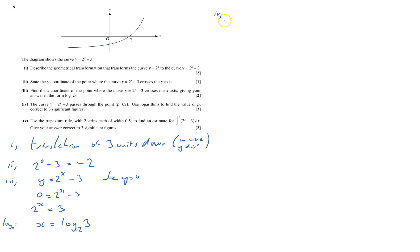It's part 4. I'm going to do it up here. The curve passes through the point. So I'm going to write the curve down: y equals 2 to the power of x minus 3. It goes through the point p, 62. And you've got to use logarithms to find the value of p to 3 significant figures. So I know that this first one is x and that one's y. So all I have to do is substitute those in there. And that gives me 62 equals 2 to the power of p take away 3.